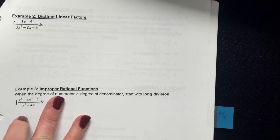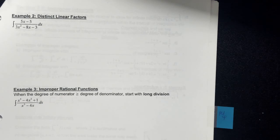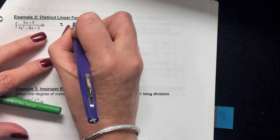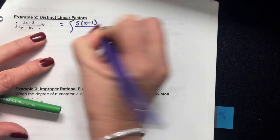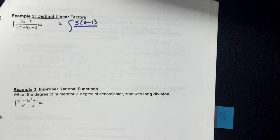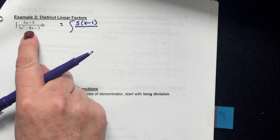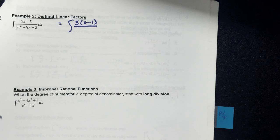Let's take a look at another example. When working on problems like this, we always check for u-sub first. If I did a u-sub here I'd need a du of 6x−8, so that won't work. Not only do you want to look at factoring denominators, but also look at factoring numerators — is there a constant you can factor out of the numerator? Yes, factor out a 5. Then factor the denominator 3x²−8x−3 using slide and divide or the x-method.